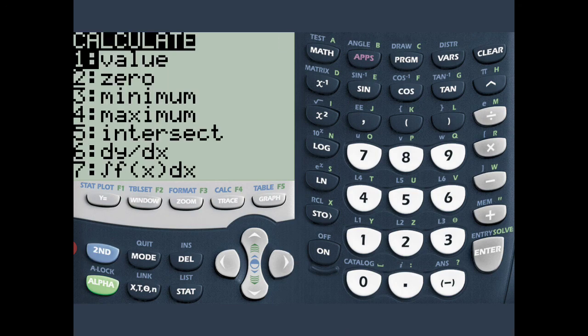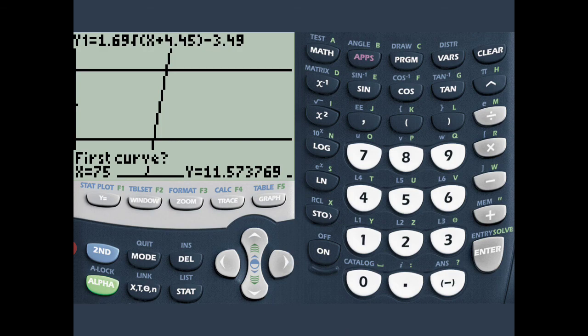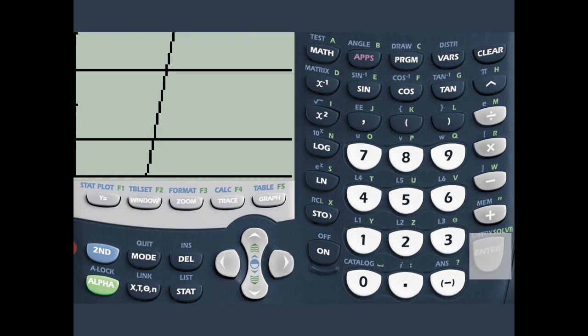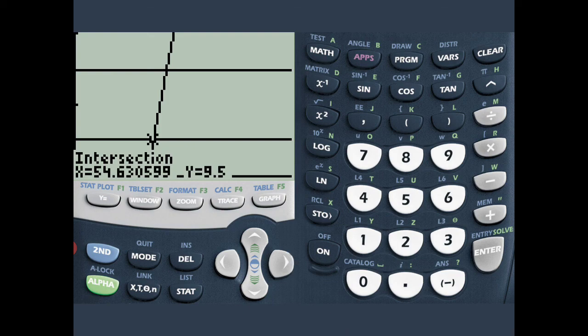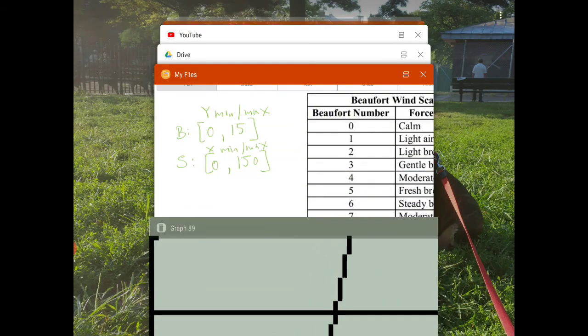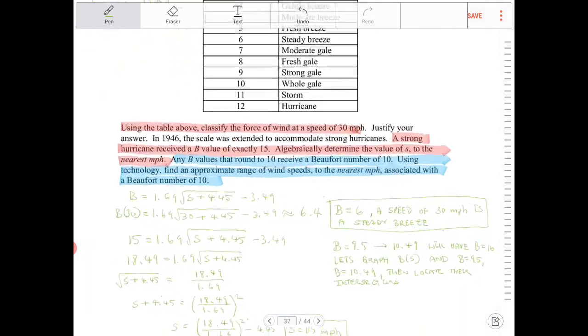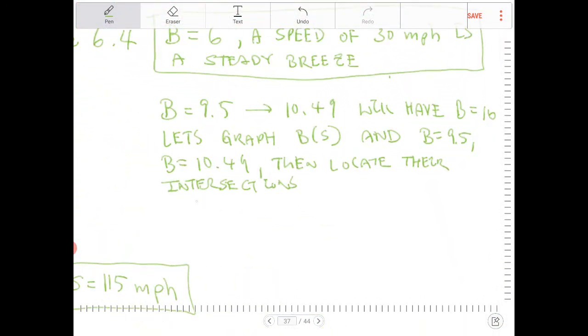So there I can see the intersections a little more clearly now. So I'm going to press 2nd, trace. I'm going to go to intersect, which is option 5. I will move my cursor down to where I believe the intersection happens and press enter 3 times. So I have 54.6. So it's roughly 55 miles per hour. So for B equal to 9.5, S is equal to 55 miles per hour.